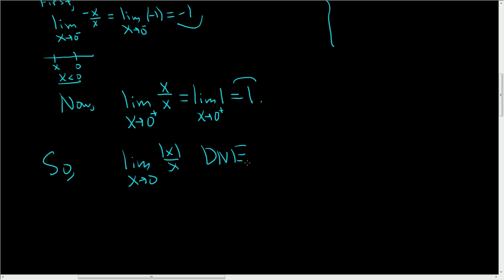So our limit does not exist, so our function is not differentiable. f of x equals the absolute value of x is not differentiable at c equals 0, but it is continuous there.